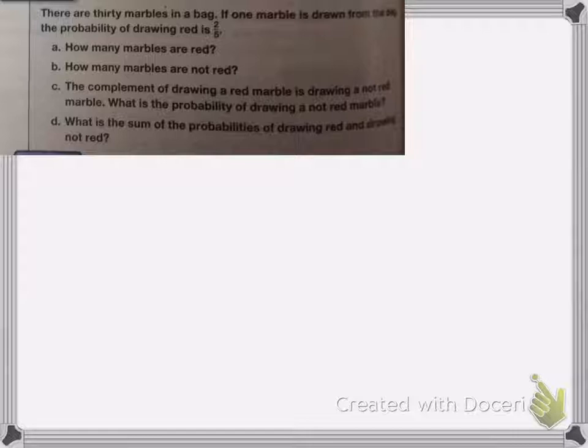So here is our next one. We have 30 marbles in a bag. If one marble is drawn from the bag, the probability of drawing red is two-fifths. So it needs to know how many marbles are red, how many marbles are not red. The complement of drawing a red marble is drawing a not-red marble. So what's the probability of drawing a not-red marble? And then what is the sum of those probabilities, the drawing red and not drawing red?